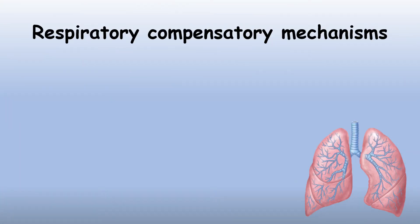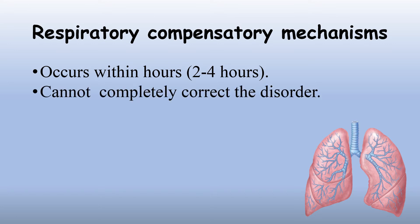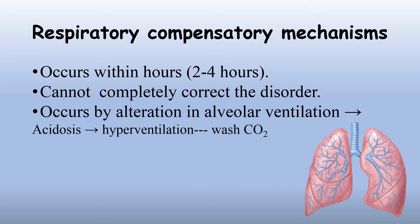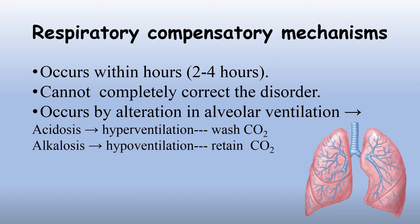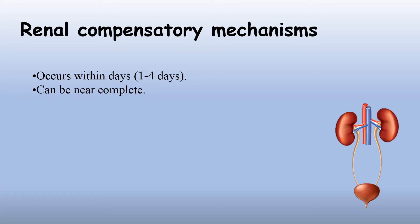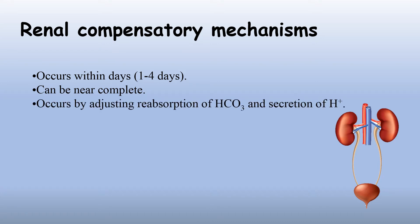Respiratory compensatory mechanisms occur within two to four hours and cannot completely correct the disorder. Correction occurs by alteration in alveolar ventilation. In acidosis, it causes hyperventilation, washing carbon dioxide out. In alkalosis, it causes hypoventilation, retaining carbon dioxide in the body. Renal compensatory mechanisms occur within one to four days and can be near complete but not full. This occurs by adjusting reabsorption of bicarbonate and secretion of the hydrogen ion.